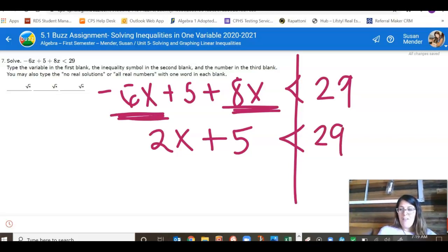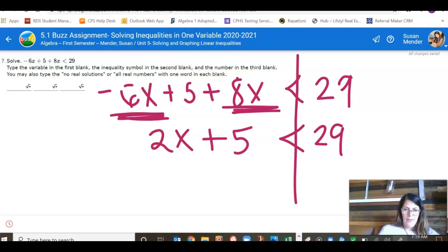Now that was the hardest step. My goal is to get x alone. I've got my x's all organized together. I need to get rid of this 2 by dividing and this 5 by subtracting. I'm going to get rid of the 5 first because it's further away. When I look at order of operations,